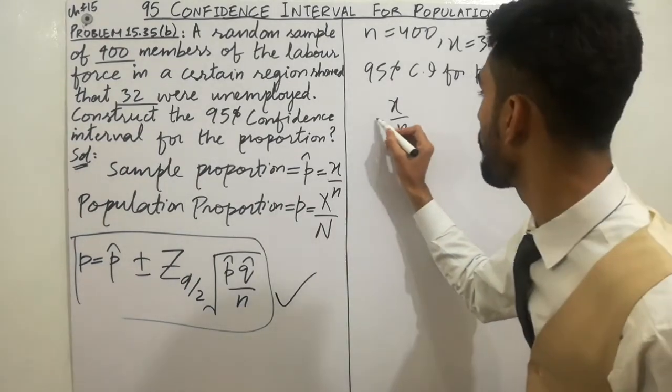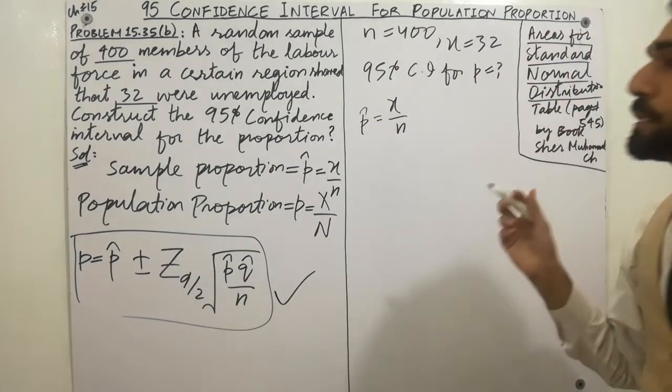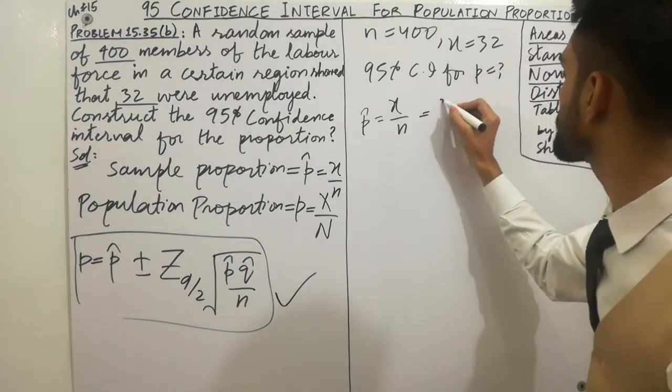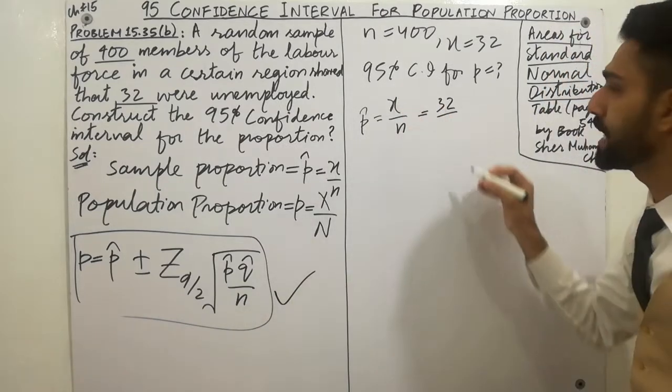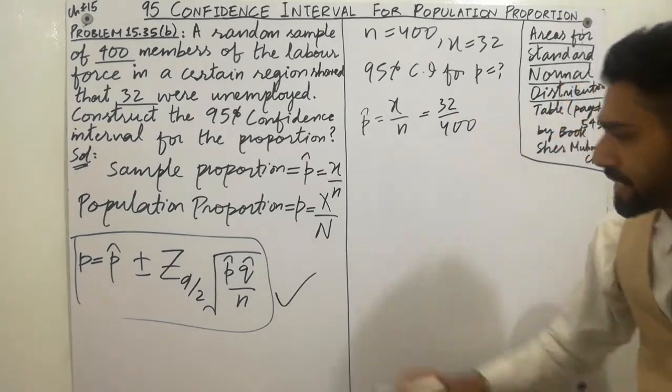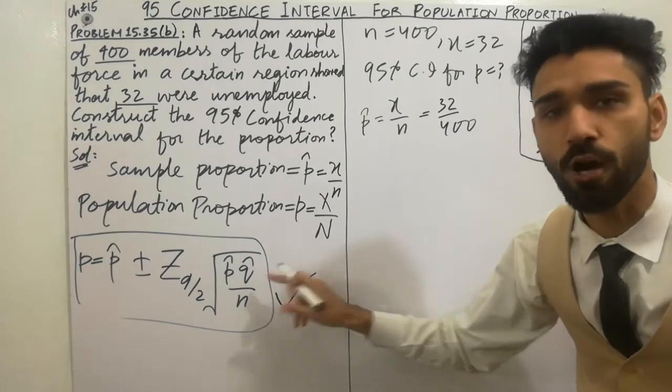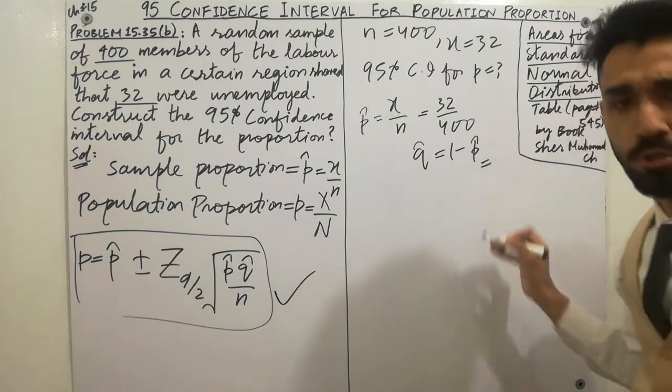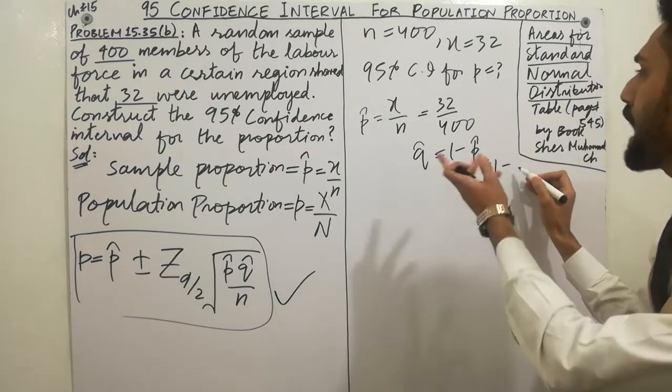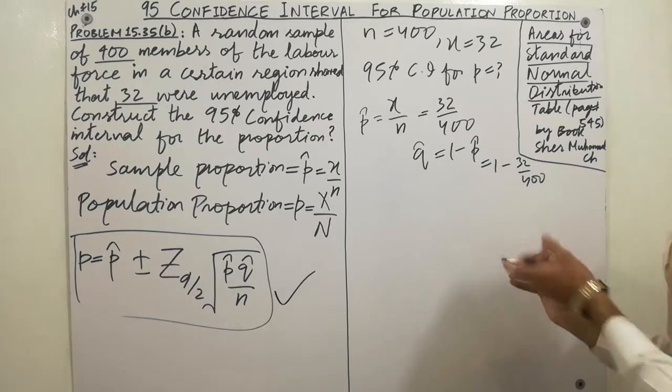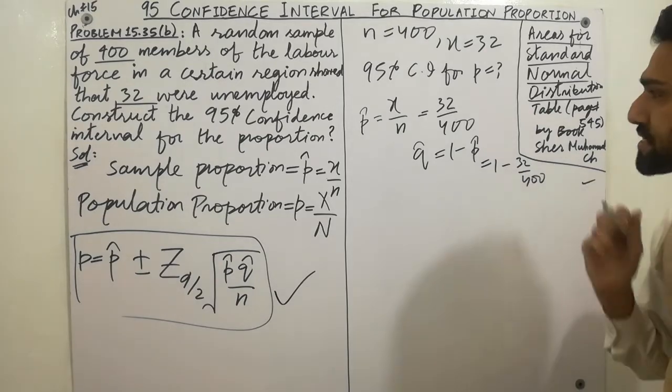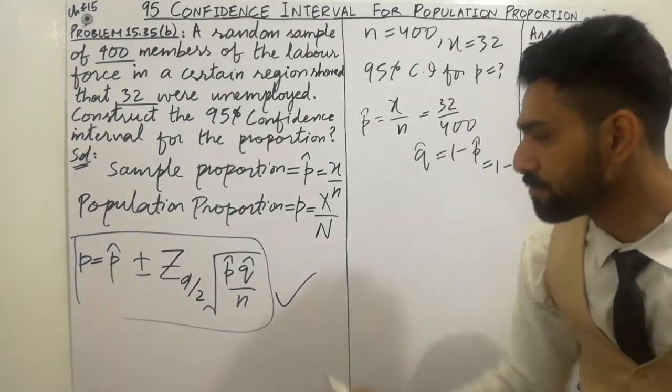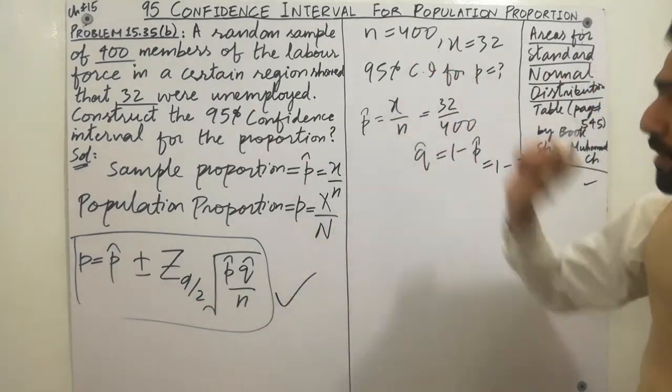So p hat - x is given as 32 and n is given here as 400. You can calculate. Similarly you can calculate q hat. Q hat is equal to 1 minus p hat. You can do it yourself - one minus p hat is 32 over 400. You can solve it very easily. Next point - you have to find the 95% confidence interval. P hat and q hat values are given, n is 400.